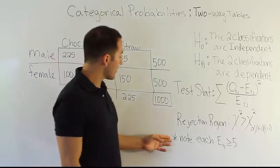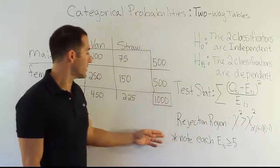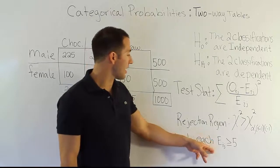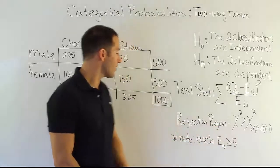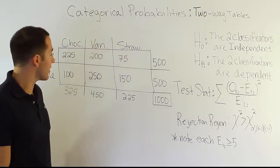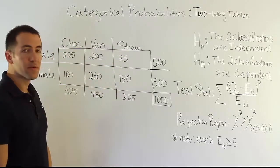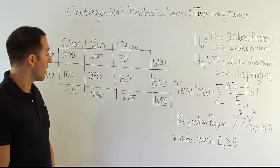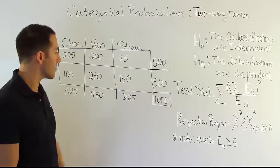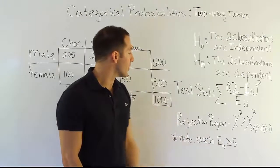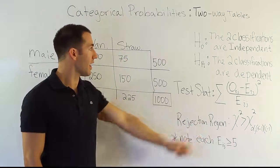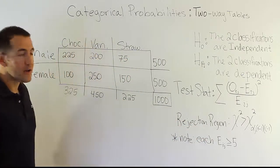There's one important detail to pay attention to: each expected value must be greater than or equal to 5. In order for this procedure to be valid, we have to make sure the expected values for each cell are all at least 5. Otherwise we can't use the chi-square distribution technique.